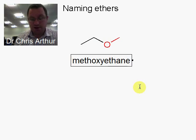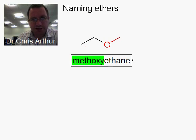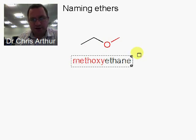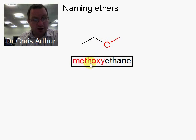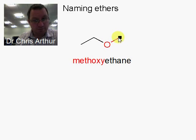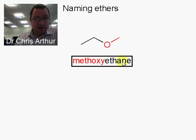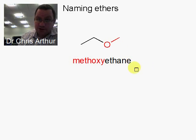Methoxy tells us that we have this ether group here, and that it's one carbon long — so it's a methyl group — and it's on an ethane chain. So this is methoxyethane.